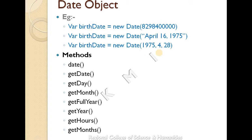The date object has several get methods. getDay returns a number 0 to 6, where 0 means Sunday, 1 means Monday, 2 means Tuesday, and so on. getMonth returns 0 to 11, where 0 means January and 11 means December.